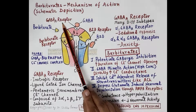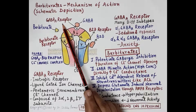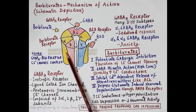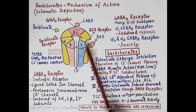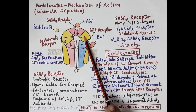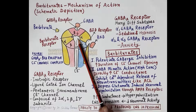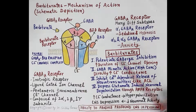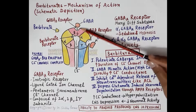The GABA-A receptor is a pentamer with five different subunits: two alpha subunits, two beta subunits, and one gamma subunit. These subunits are arranged around a central pore that is a chloride channel. GABA binds to the active site of the GABA-A receptor. As soon as GABA binds to its active site, there is opening of the chloride channels and chloride ions move inside the neuron.